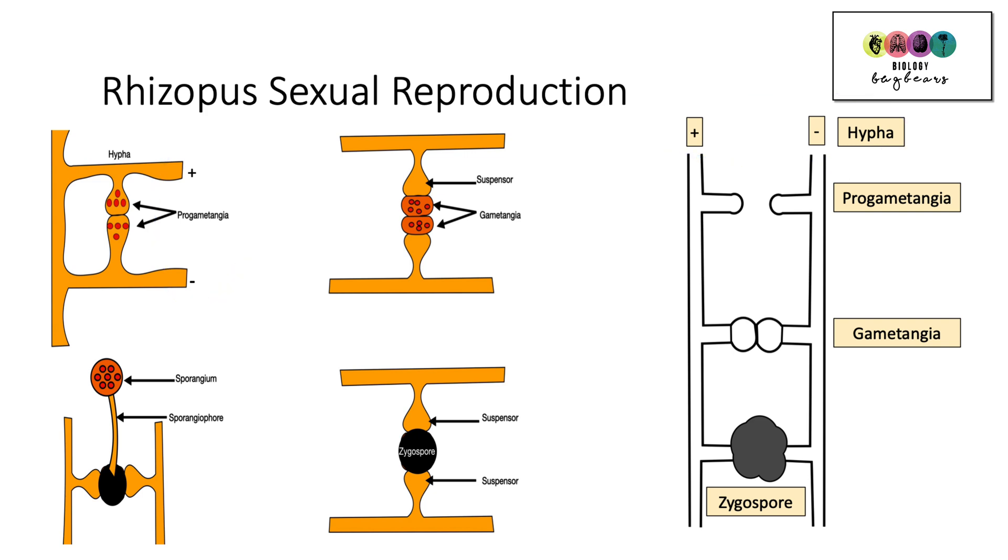So the diagram on the right here is adapted from a marking scheme and the one on the left is a more detailed version that I've made just to make sure we tick all boxes. So in this particular year, they wanted hyphae, the plus and the minus, progametangia, gametangia and the zygospore. But bear in mind, you could be asked for suspensors, the sporangium, the sporangiophore. So it's worth your while doing some very simple sketches, but just including every possible label you can think of.